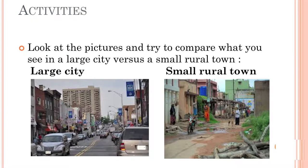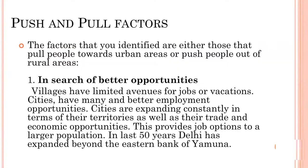There is an activity on screen. You can look at the picture and try to compare what you see in a large city versus a small town. The question arises: what are the advantages of living in a large city, especially in terms of employment, recreation and cultural activities? And what are the disadvantages of living in a small town? Now we will list some of the factors that are responsible for rural migration — these are called pull factors.